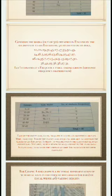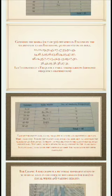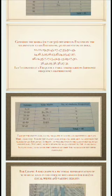Let's consider the first class interval, that is 0 to 10. In 0 to 10, the marks will be counted from 0 to 9, and 10 will not be included in that class interval. 10 will be included in the second class interval, that is from 10 to 20. Similarly, 20 will be included in the third class interval, not in the second. So in the first class interval from 0 to 10, how many students are there whose marks are from 0 to 9?